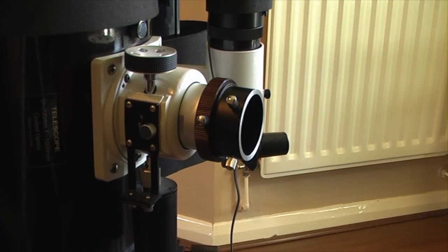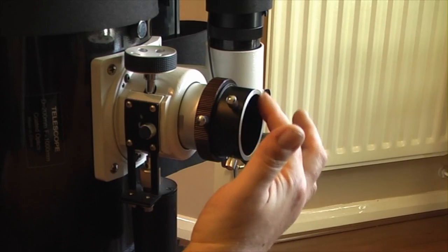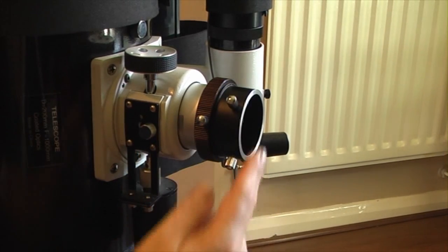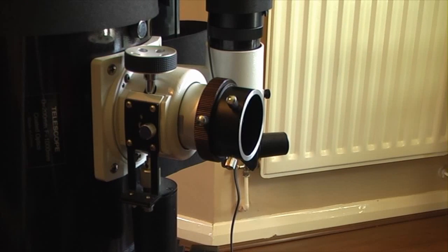Now the first thing that you may notice is that even though that is the standard Skywatcher adapter that is in there, I had mine machined by an engineer friend and I basically just had 10mm taken off the end and then drilled and threaded for the fixing screws. It just gave me that extra 10mm of inward travel which at that time was what I wanted, and we'll call that the Mark 1 version.